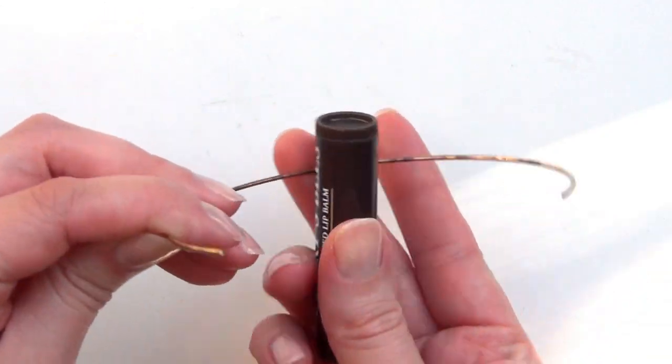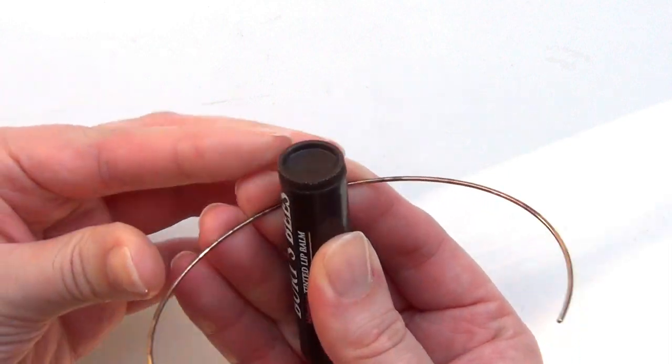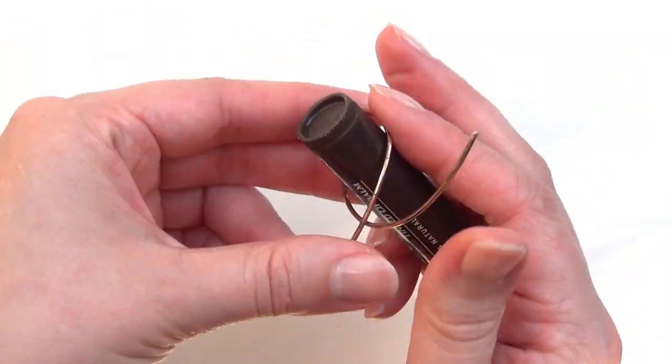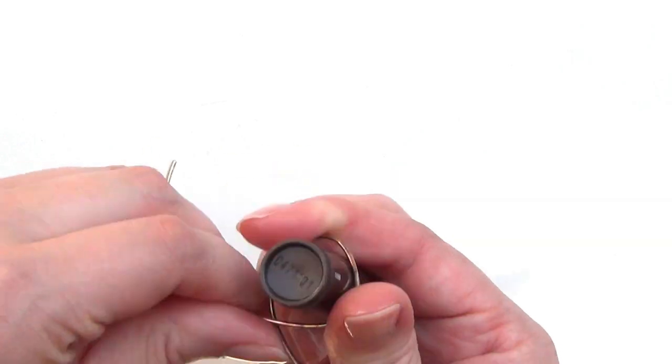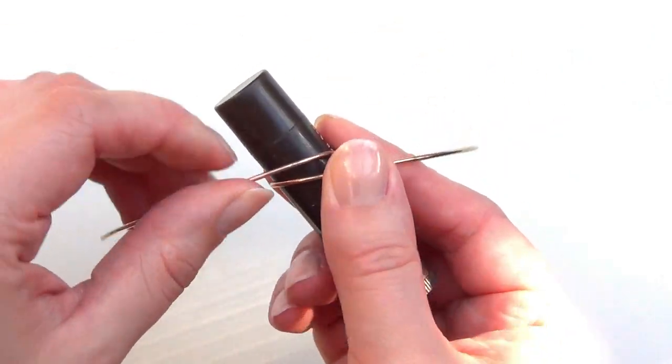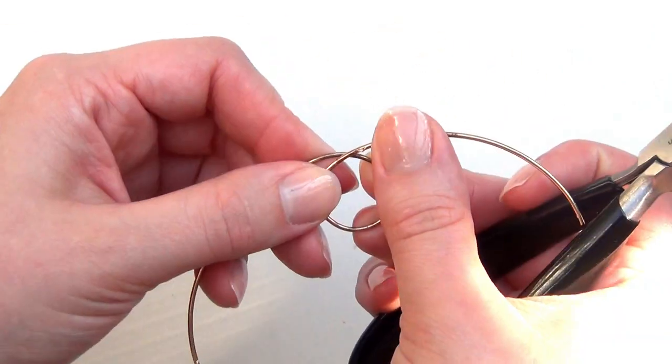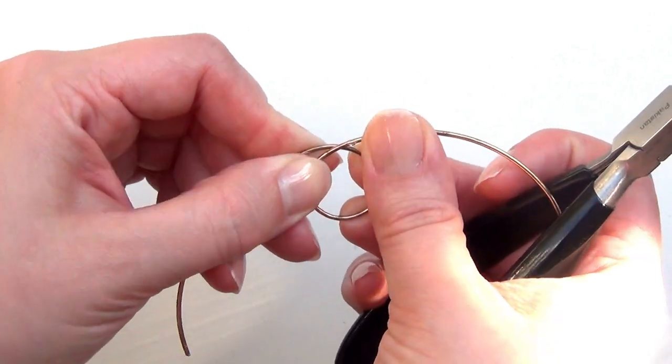First, wrap the very middle of the wire around the chapstick container. Once that's nice and tight on the chapstick container, that part is done. The point where the wire crosses over itself is going to be the top of the ring, and that's the point you're going to be working around.